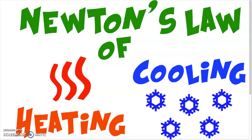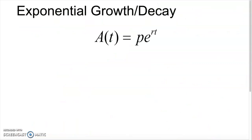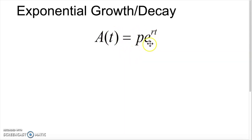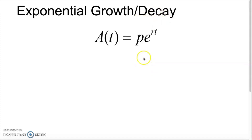To get into Newton's Law of Cooling, we're going to start with a simpler formula you've likely seen before: exponential growth and decay. This comes up in science classes and in a lot of algebra classes. If you have something that's growing or decaying, the amount you'll have after some period of time is just whatever you started with times e — that special number — to the rt, where r is the rate and t is the time. This works really well for simple problems and especially well for decay.